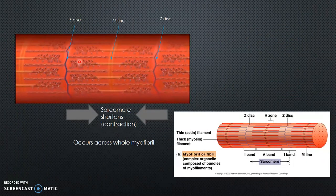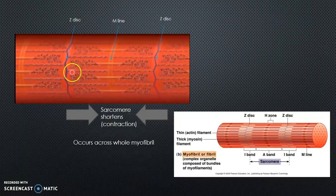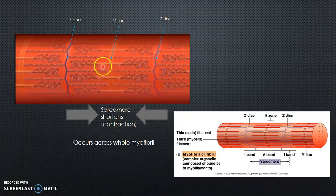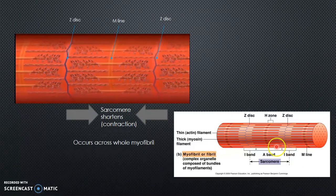The image in the top left shows a shortened sarcomere, which occurs over the whole myofibril as there are many sarcomeres in the myofibril. It also shows the Z disc, which is what the actin binds to perpendicularly and is the border of each sarcomere, and the M line, which is the middle line of the sarcomere and is what the myosin is binding to. The image on the right shows the I band, which is the region where there are only actin filaments, the A band, which is the region where there are mostly myosin filaments, and the H zone, which is the area where there is no actin overlapping the myosin.